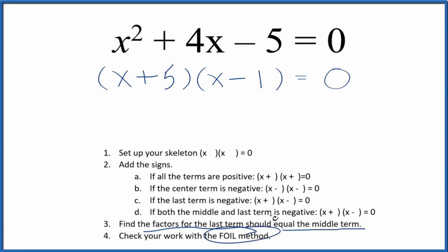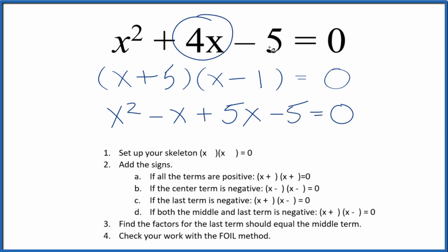Let's check our work though with the FOIL method. First, outside, inside, last, we get. And we can combine negative x and 5x, that gives us the 4x. Here's the negative 5x, here's the x squared. So this is the same thing we started out with. So we correctly factored the equation.